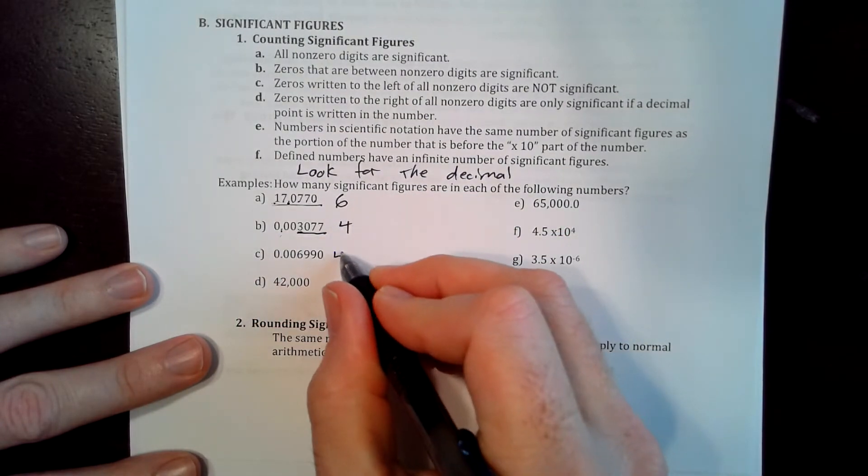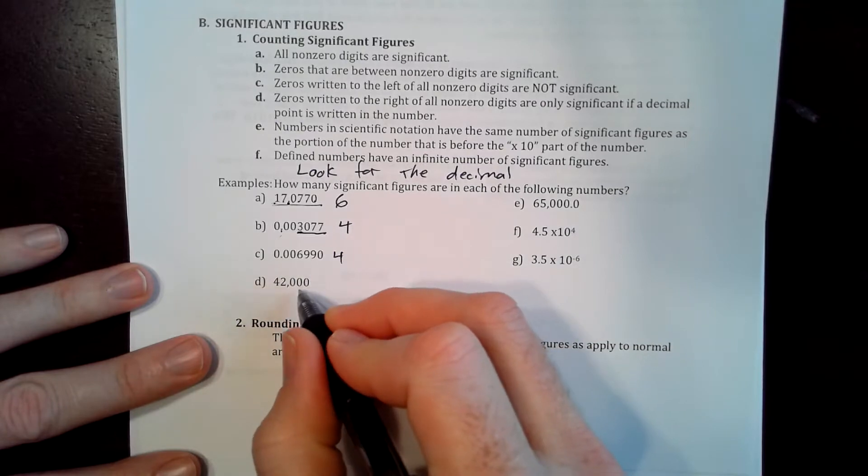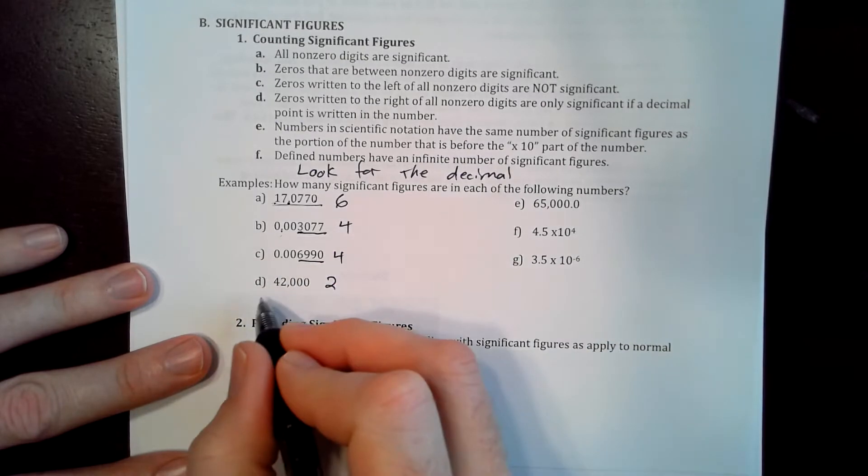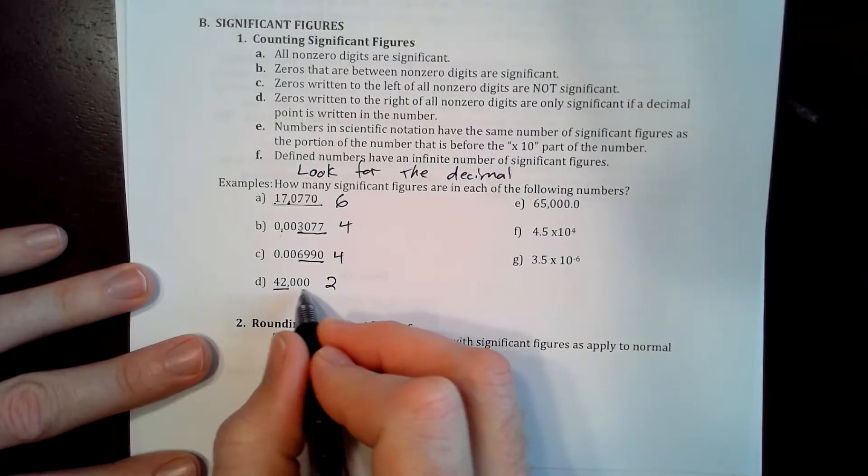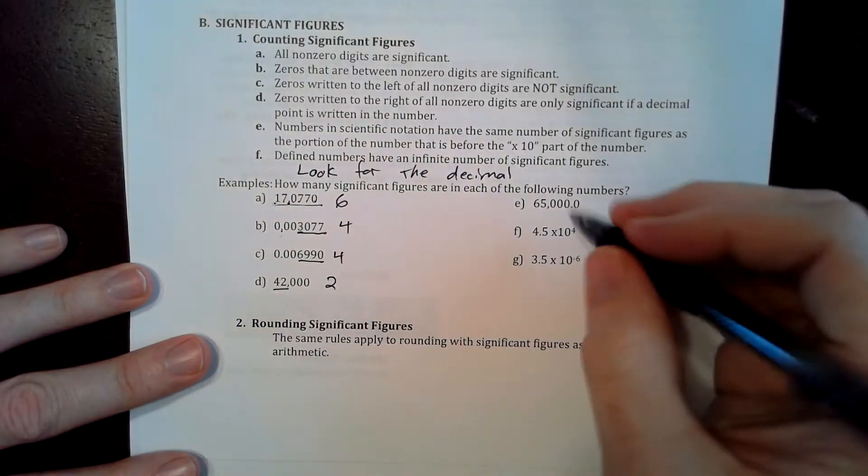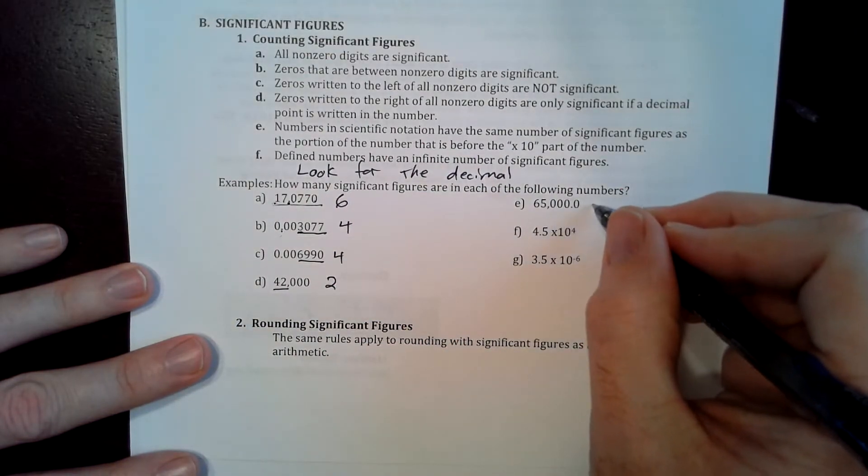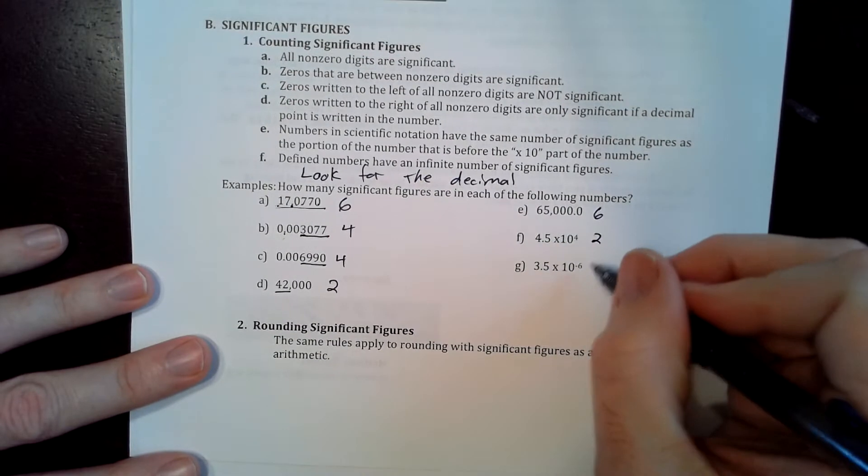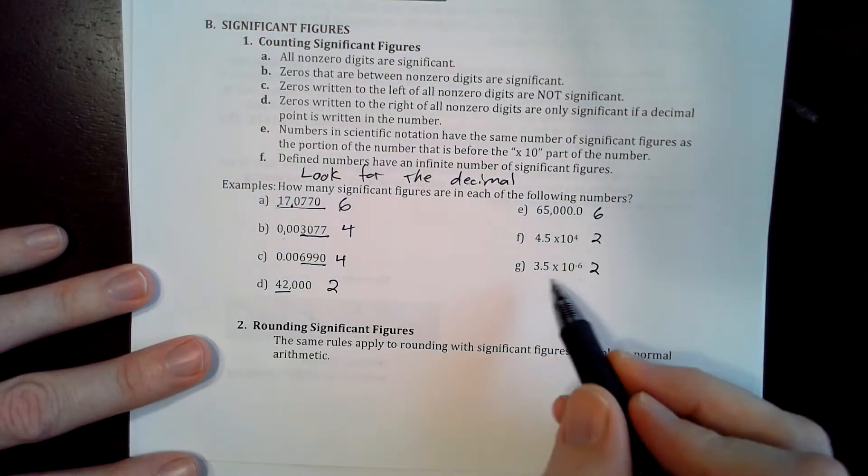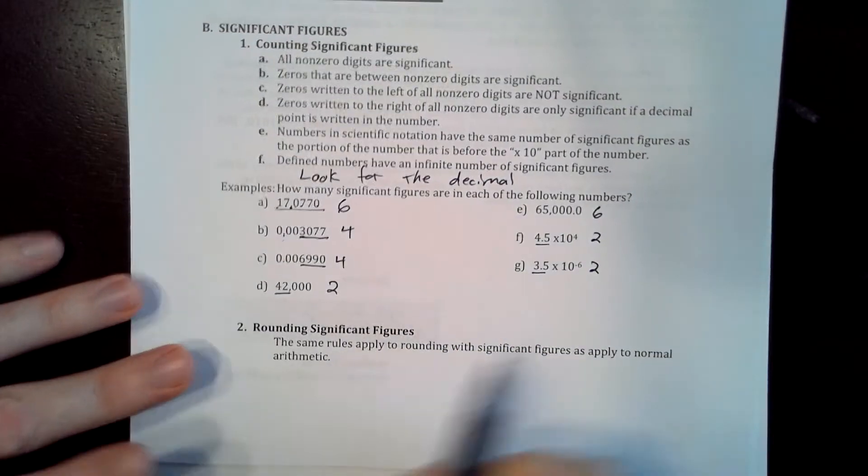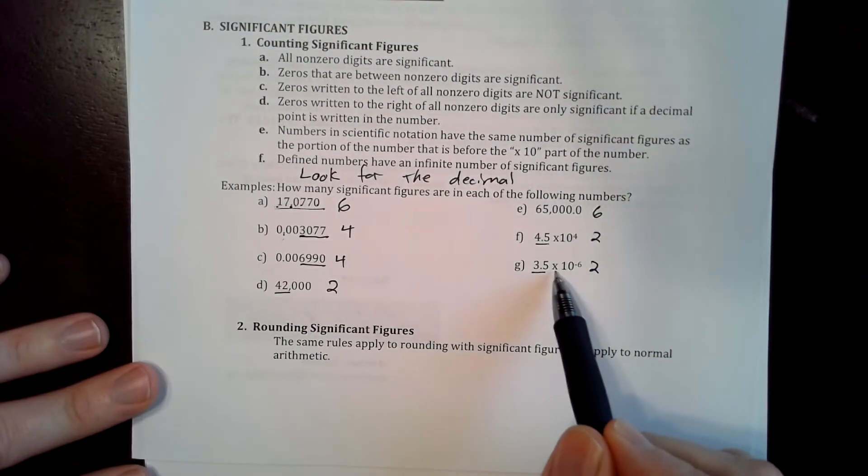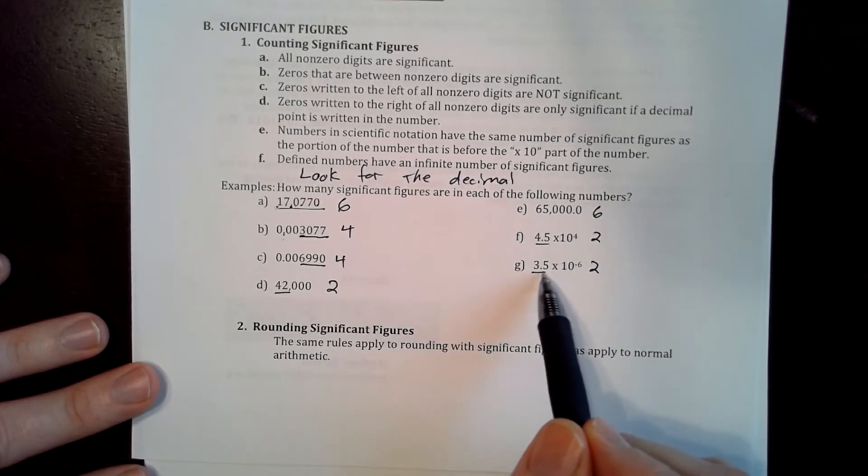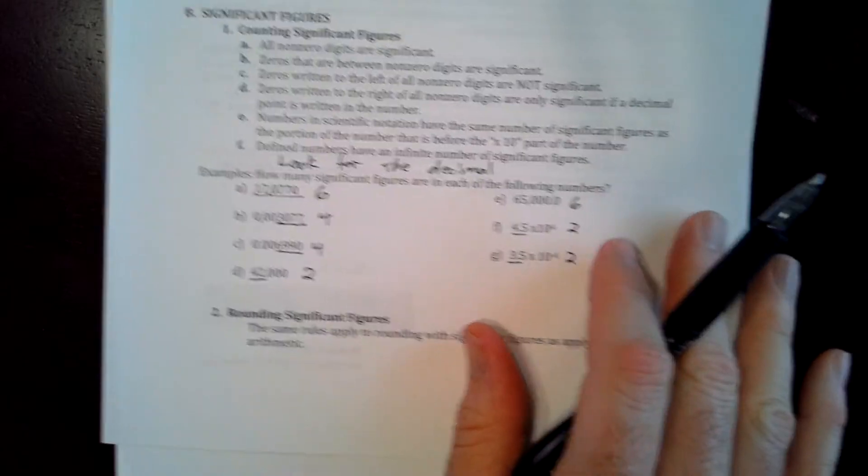This one has four. This one has two because there's no decimal, so we're just going to only count those two. This one has six. This one is two, and this one is two. We only count what is ever in the coefficient right here. This times 10 to the whatever doesn't matter. It's only this coefficient right here.